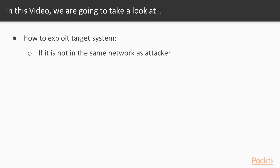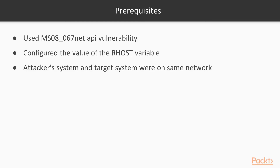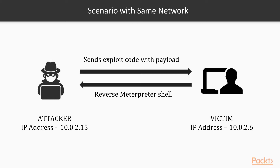In this video we are going to see how to exploit the target system if it is not in the same network as that of the attacker. In the previous section, we used the MS08-067 Net API Vulnerability in our target system and got complete administrator level access. We configured the RHOST variable as the IP address of our target system. The exploit was successful only because the attacker's system and the target system were both on the same network. This scenario was pretty straightforward, as shown.